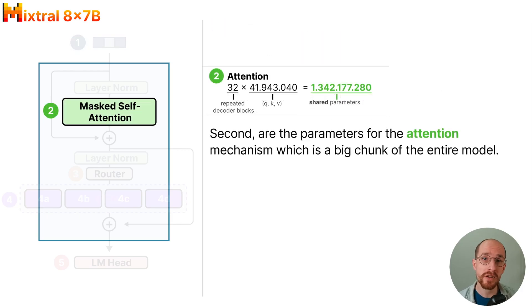Second are the parameters for the attention mechanism which is a big chunk of the entire model with more than 1 billion parameters.